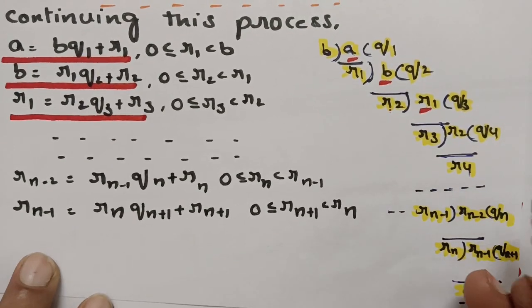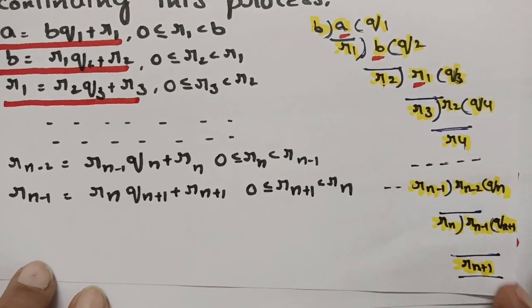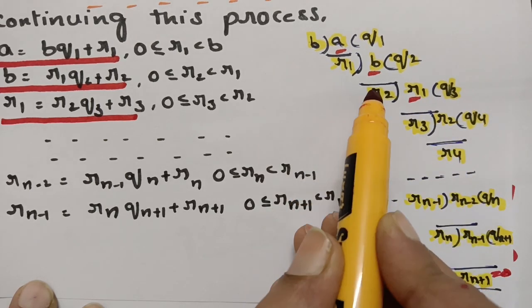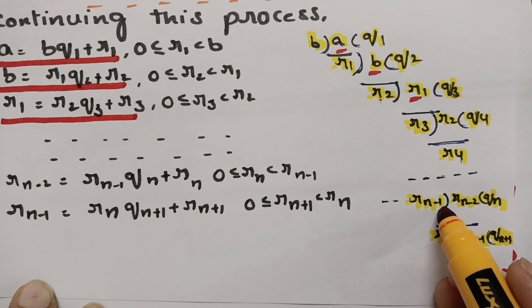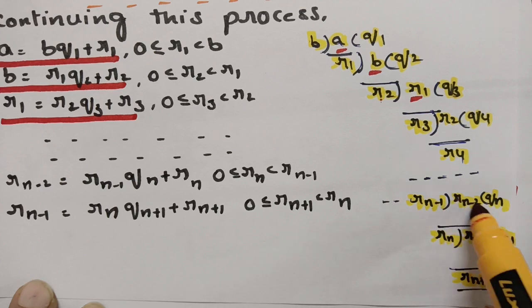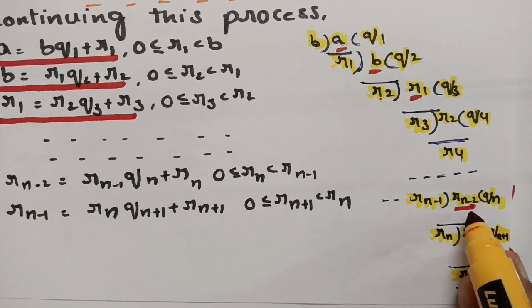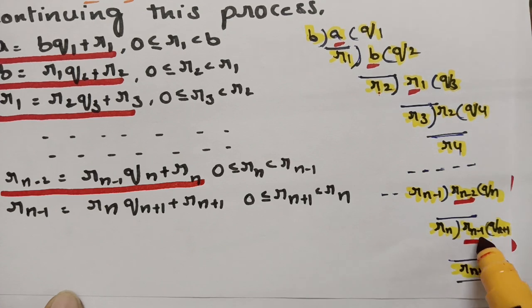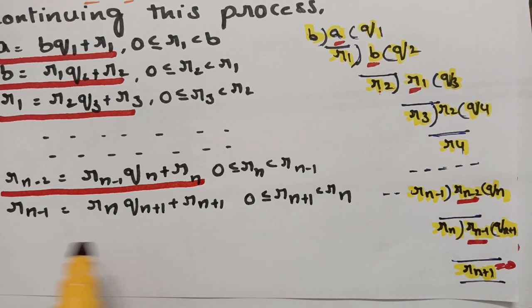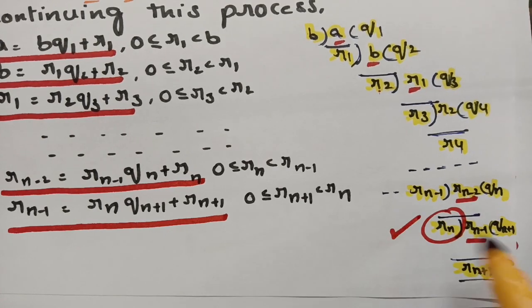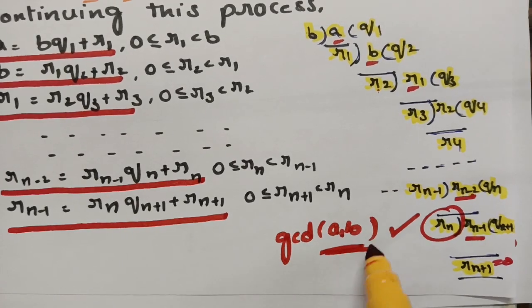If you continue this process and the final remainder Rn+1 equals 0, then this last non-zero remainder Rn will be the GCD of A and B. So this is what I have shown step by step, and if Rn+1 equals 0, the non-zero remainder Rn is the GCD of AB.